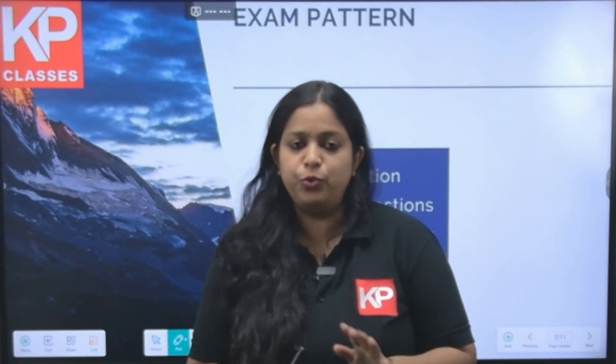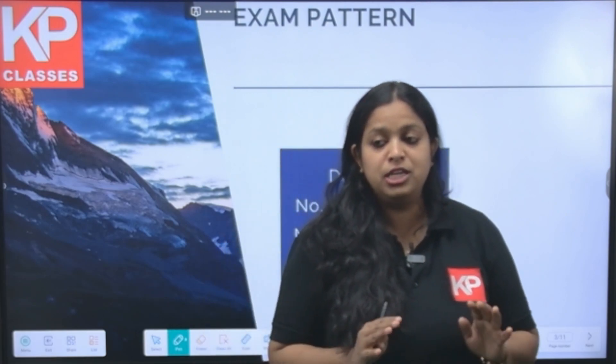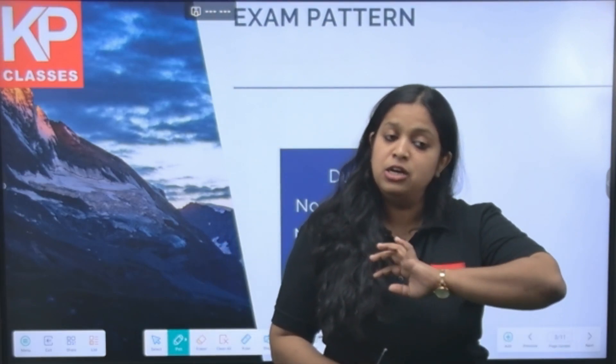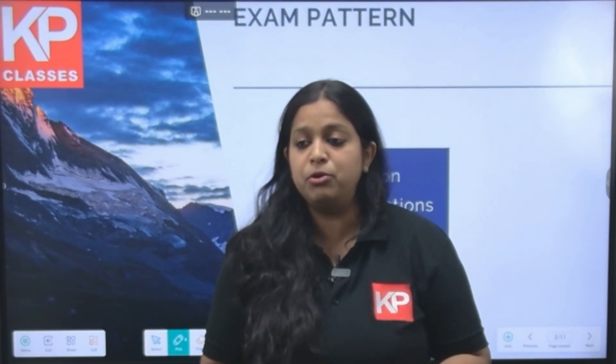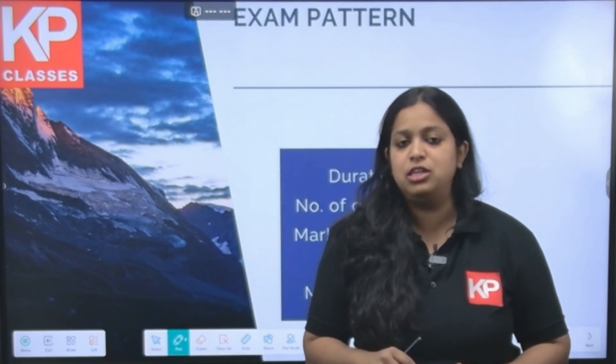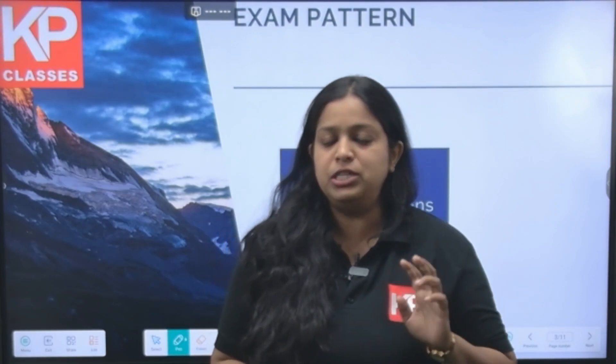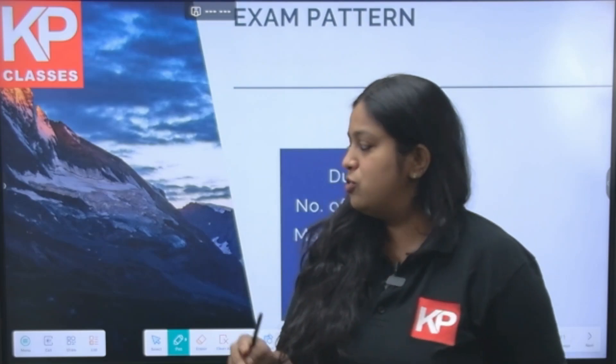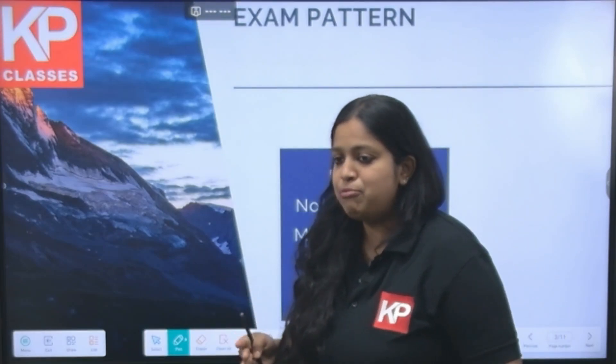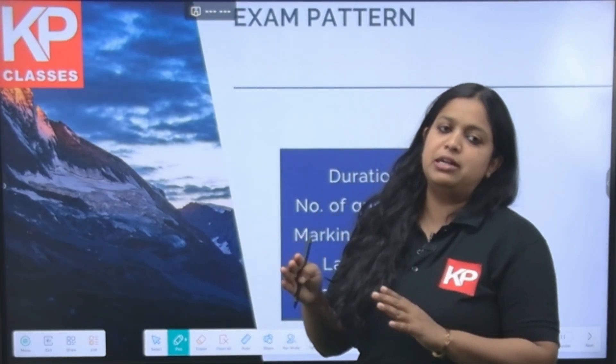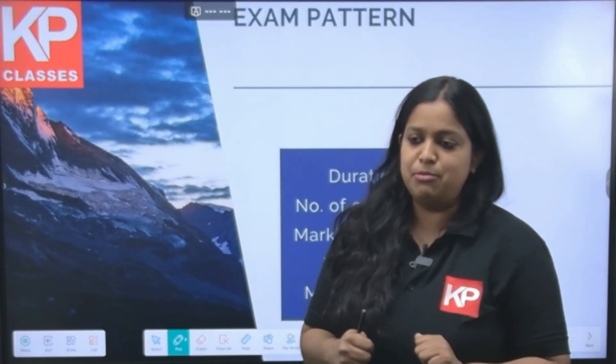Part A consists of 20 questions, of which only 15 are required to be attempted. Part C consists of 80 questions, of which only 25 are required. Part B consists of 50 questions, from which 35 are required. There are negative marks in all parts — Part A, Part B and Part C.